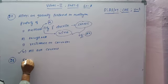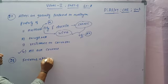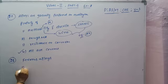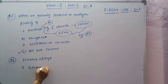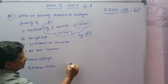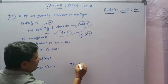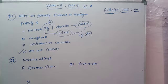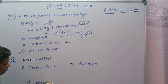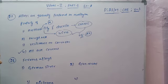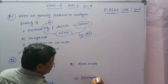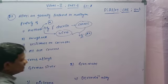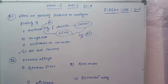Bit number 28: Which of the following is a ferrous alloy? A ferrous alloy means iron is one of the compositions. The options are: first, German silver; second, gun metal; third, nichrome; fourth, duralumin.